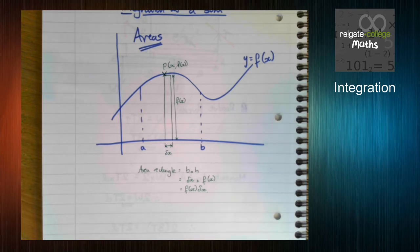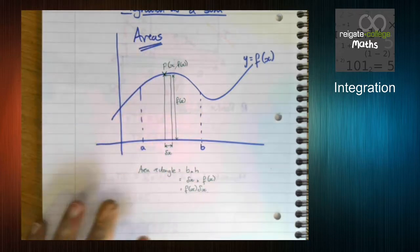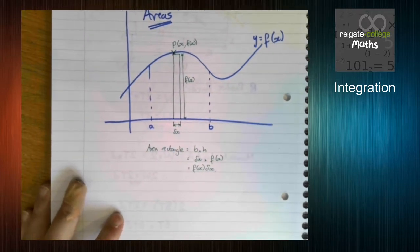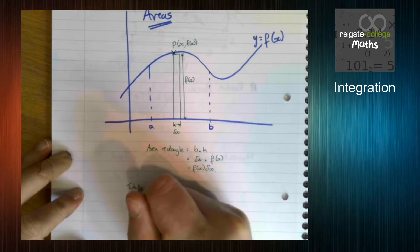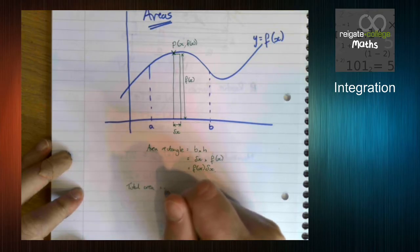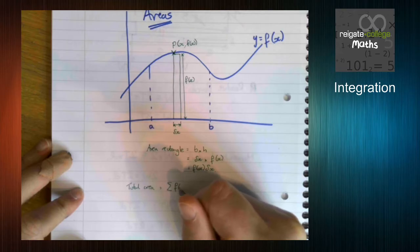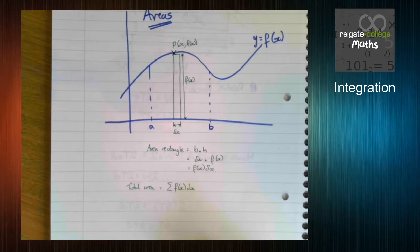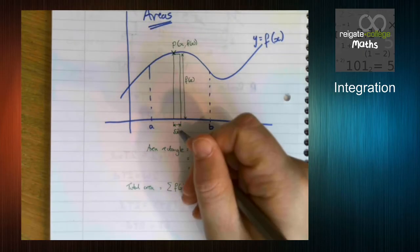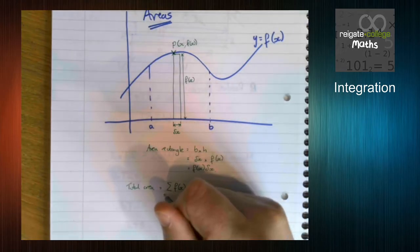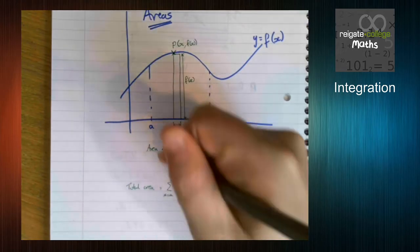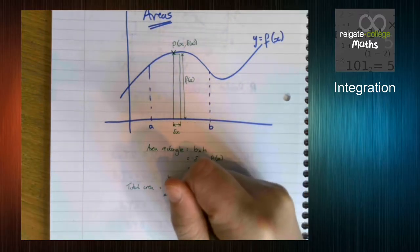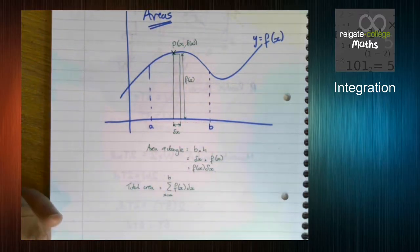So what do we do now? Well we've got lots of these rectangles. So this area here we're going to work out, the total area is going to be the sum of all of these rectangles. Now we have a start point A. So we're going to sum from x is A up to x is B. And this is how we work out the area.